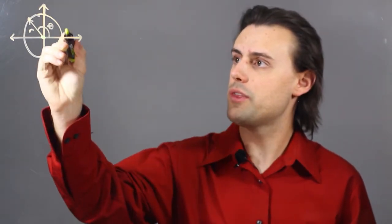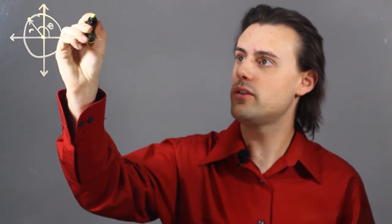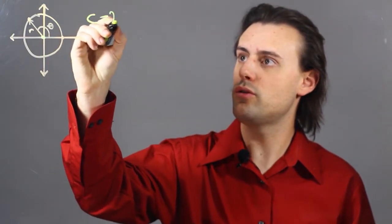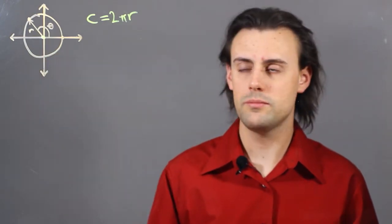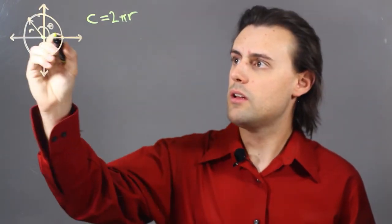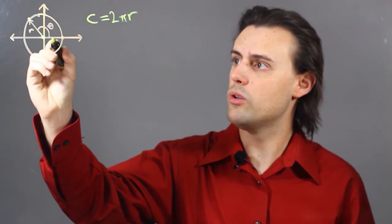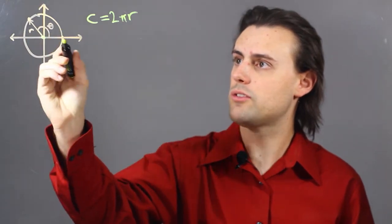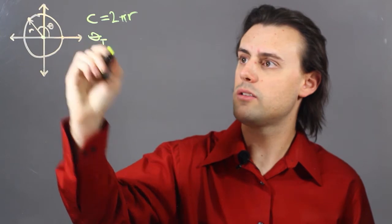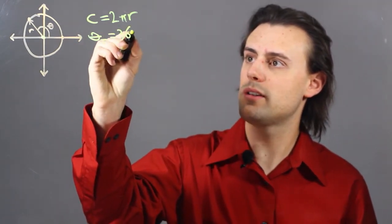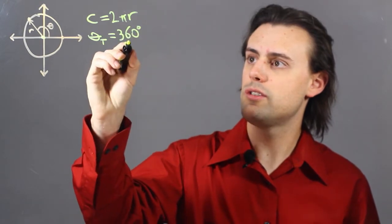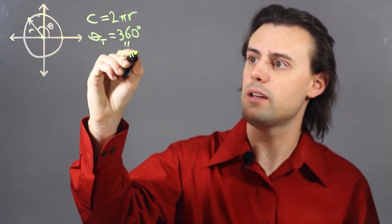We know that the circumference of a circle, C, is equal to 2πr, where r is our radius, and we know that the total angle for the entire circle, theta sub t, is equal to 360 degrees, which is equal to 2π radians.